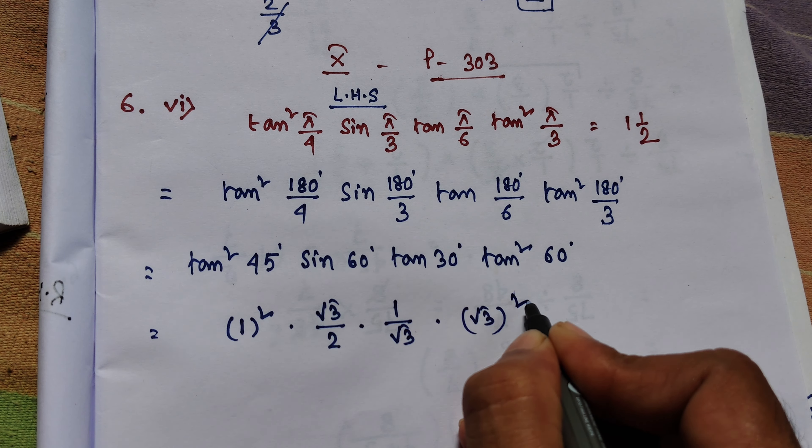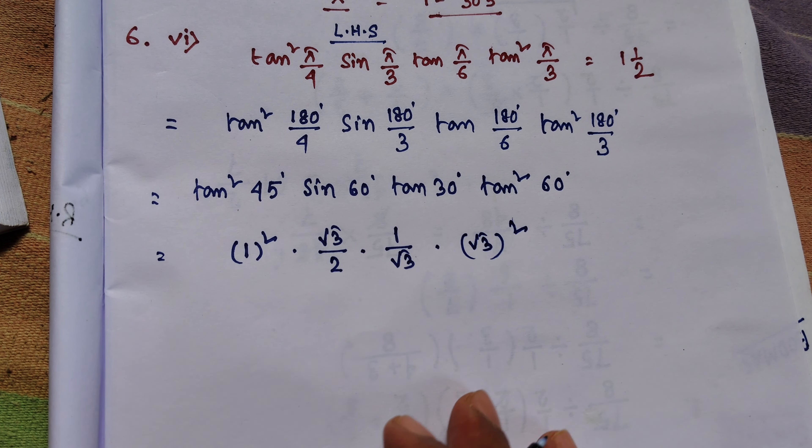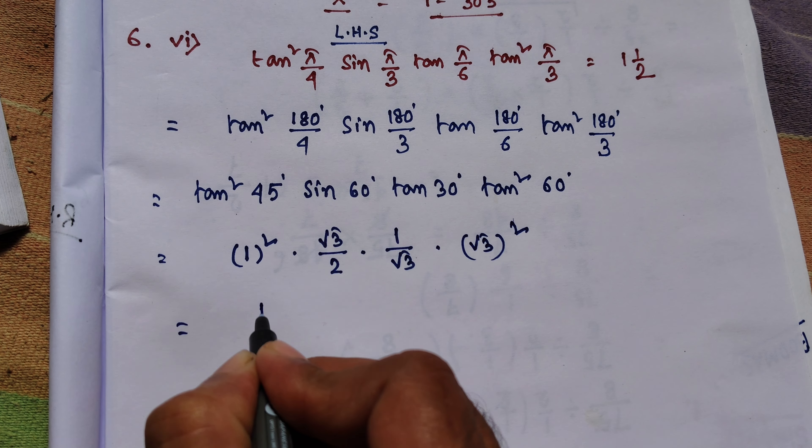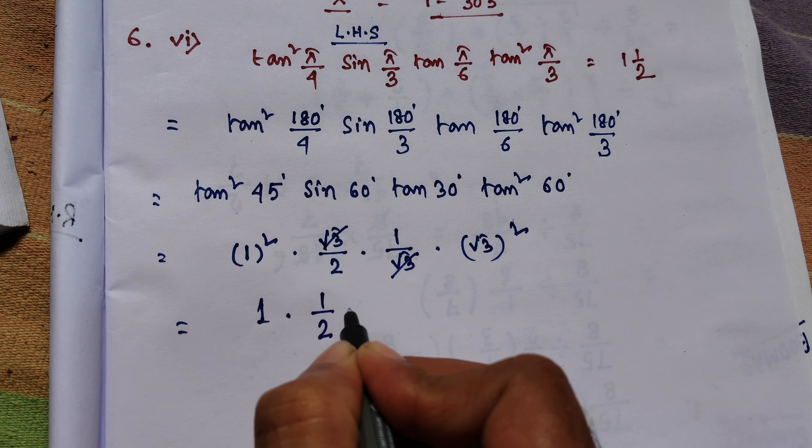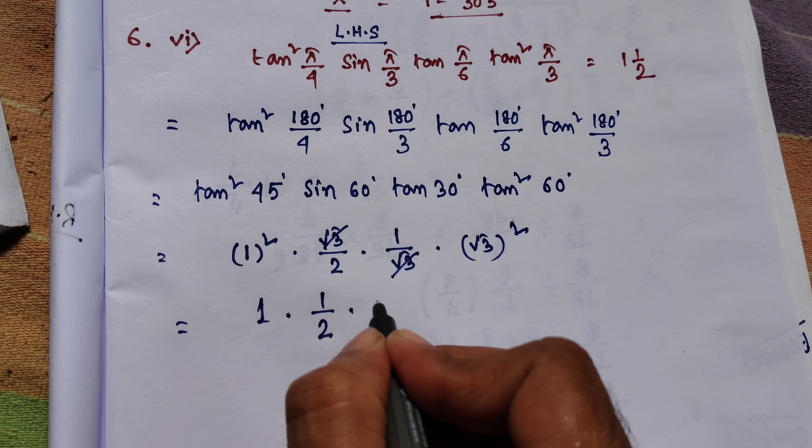So this is equal to root 3 squared. If we don't have to put this one, we will do a calculation. 1 squared is equal to 1, root 3 is equal to root 3, and root 3 squared is equal to 3.